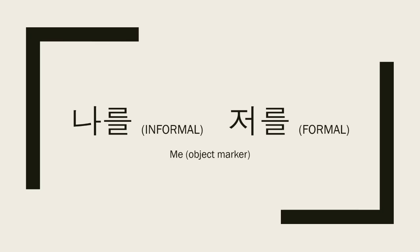나를 and 저를 — 를 is an object marker. When it's with I — 나 or 저 — it becomes 'me.' Because in English, the object form of I is me. So, for example, if you say 'Namjoon likes me,' in Korean you say 남준이는 저를 — or 나를 — 좋아합니다. So 를 is an object marker and it translates as 'me' in English.